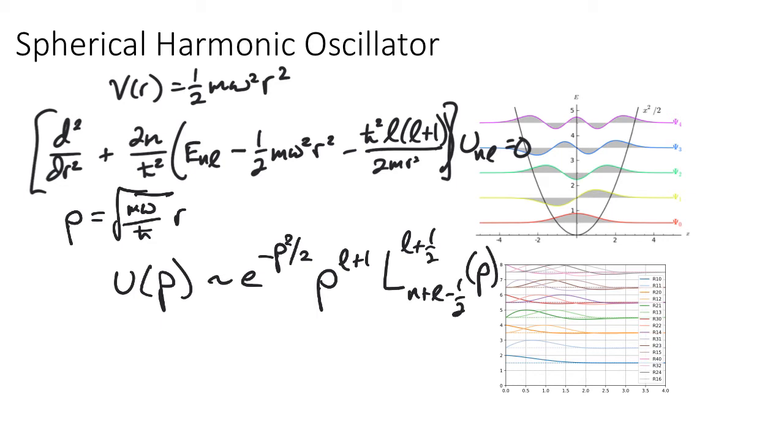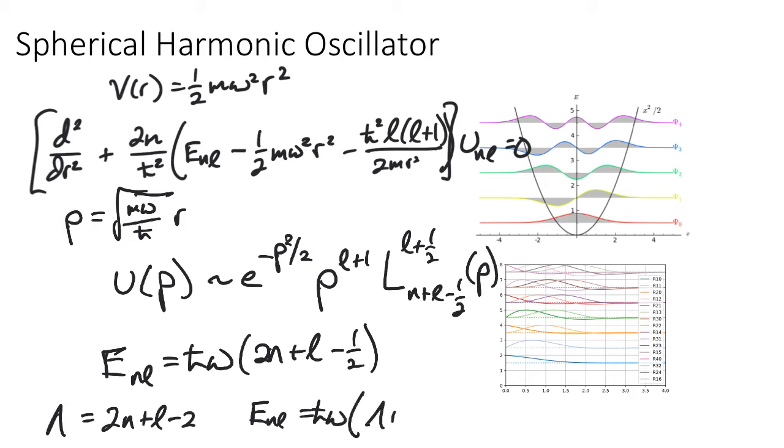So with this input, then, the energy eigenstates will be ℏω(2n+L-½), where if we take λ, we define a new variable λ = 2n+L-2, then E_nL equals ℏω times (λ + 3/2).